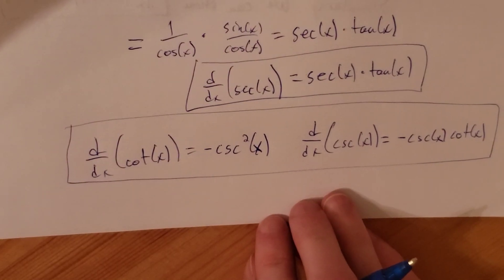Example one: find d/dx of tangent of x. Well, d/dx of tangent of x is the derivative of sine over cosine, since tangent is sine over cosine. So how do we solve this? That's our quotient rule.